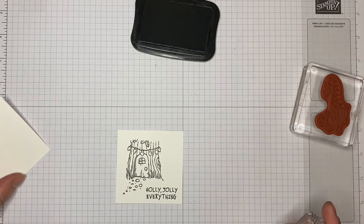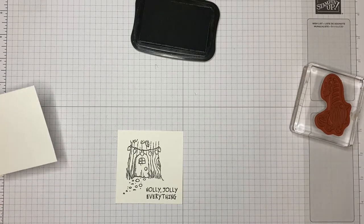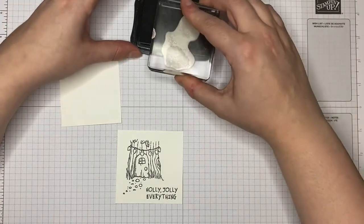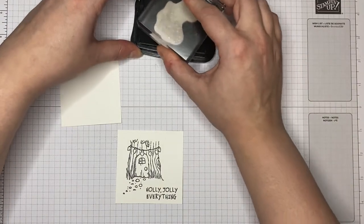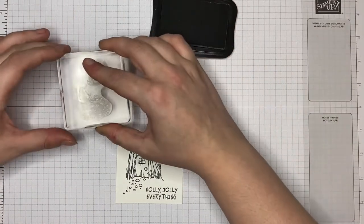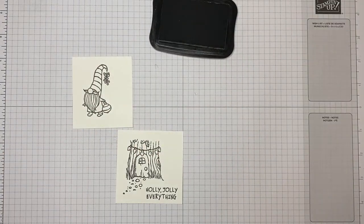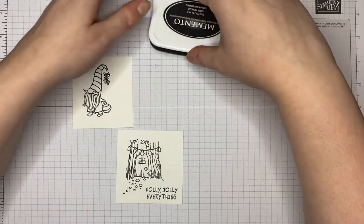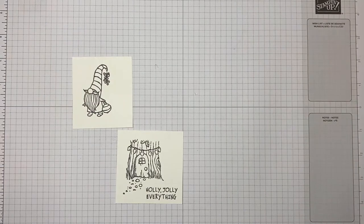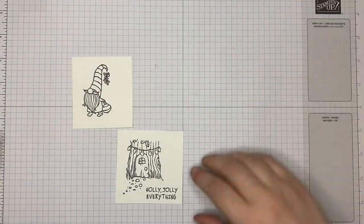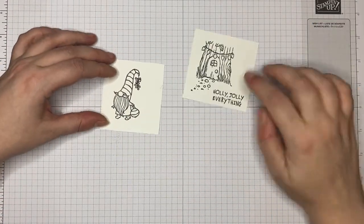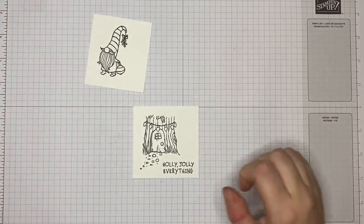Beautiful. Love it. Okay, and then the GNOME himself goes on to our scrap piece that we have here. Okay, so that's enough stamping. Pop the memento out of the way.